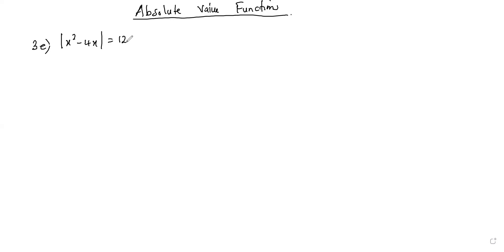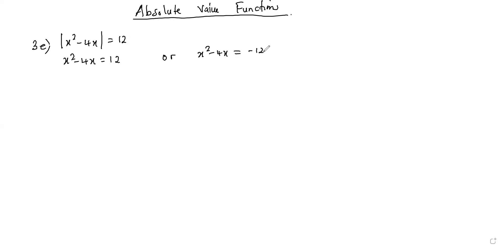We contract it inside but we don't care — we do the same thing. So we have x squared minus 4x equal to 12, or x squared minus 4x equal to negative 12. And then we solve the two equations.